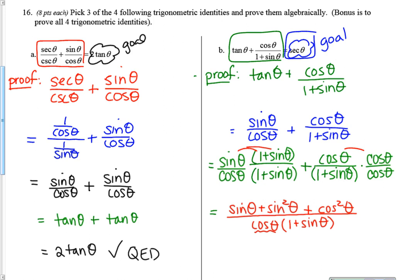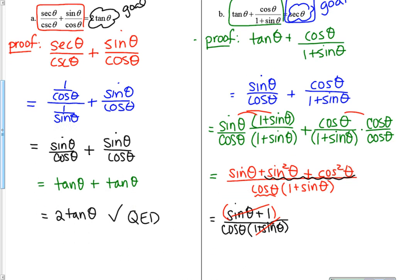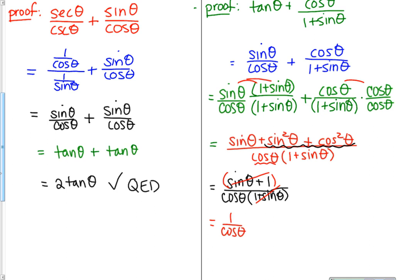Looking at the top, I see squares — whenever I see squares, I look for Pythagorean identities. I have sine squared plus cosine squared, which equals one, so I can replace that with a one. Now I can reduce: one plus sine and sine plus one are the same thing, so I can factor that out. After reducing, I'll have one over cosine. One over cosine is secant. So that's secant theta. QED — I've shown everything clearly, one step at a time.